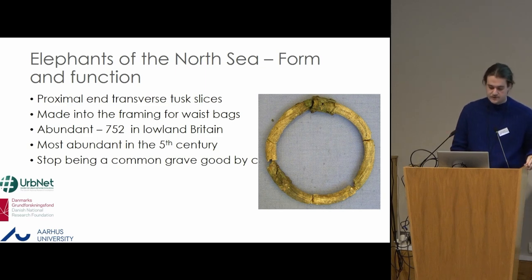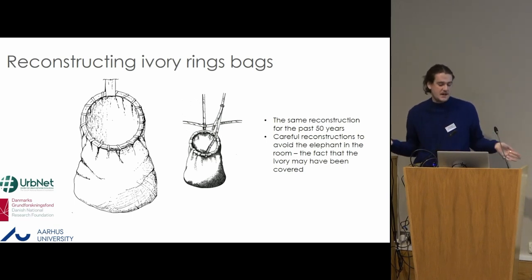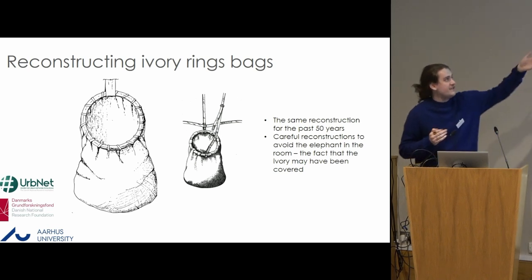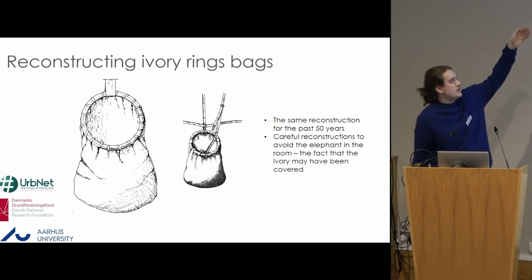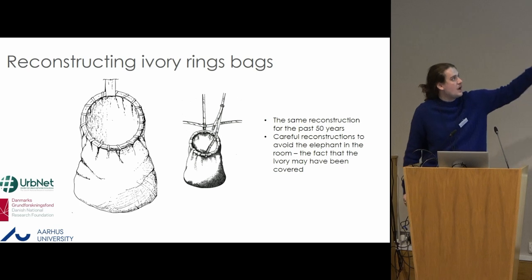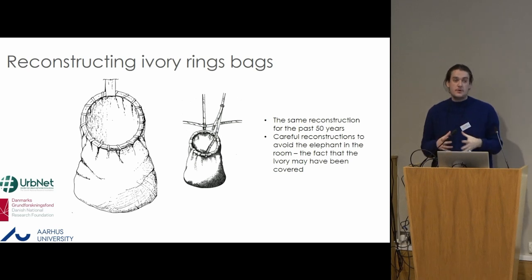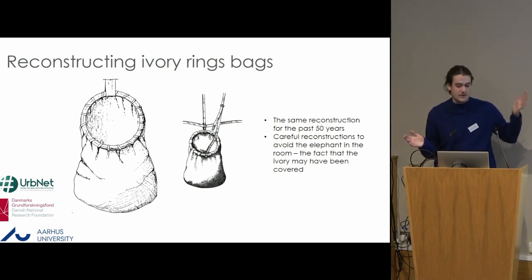Here's a reconstruction of an ivory ring as a waist bag. We've had this reconstruction for the past 50 years. As you can see, there's a very conscious effort in this reconstruction to make sure the ivory is visible — on one example there are small tabs of leather, on the one closest to me it's stitched on. So there's a conscious effort by the archaeologists who made these reconstructions to show the ivory, though there was no archaeological evidence for that at the time these were created.